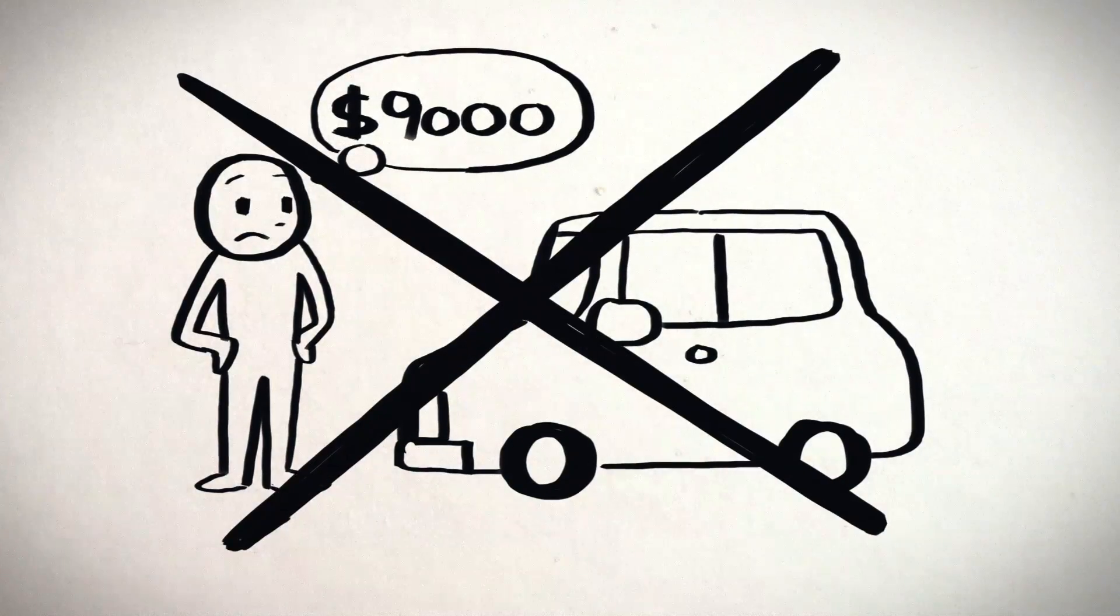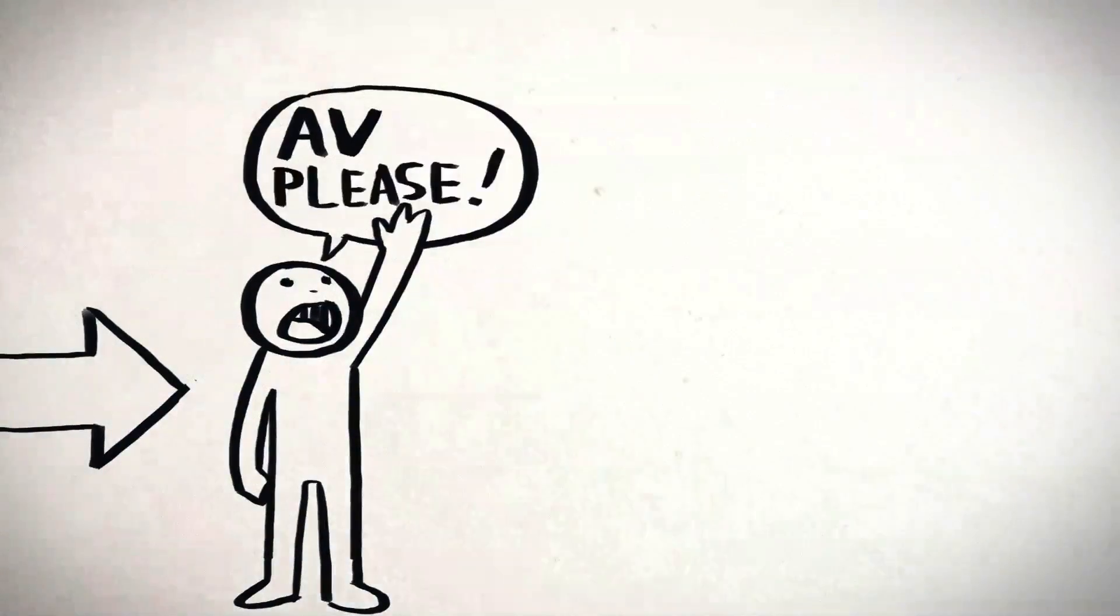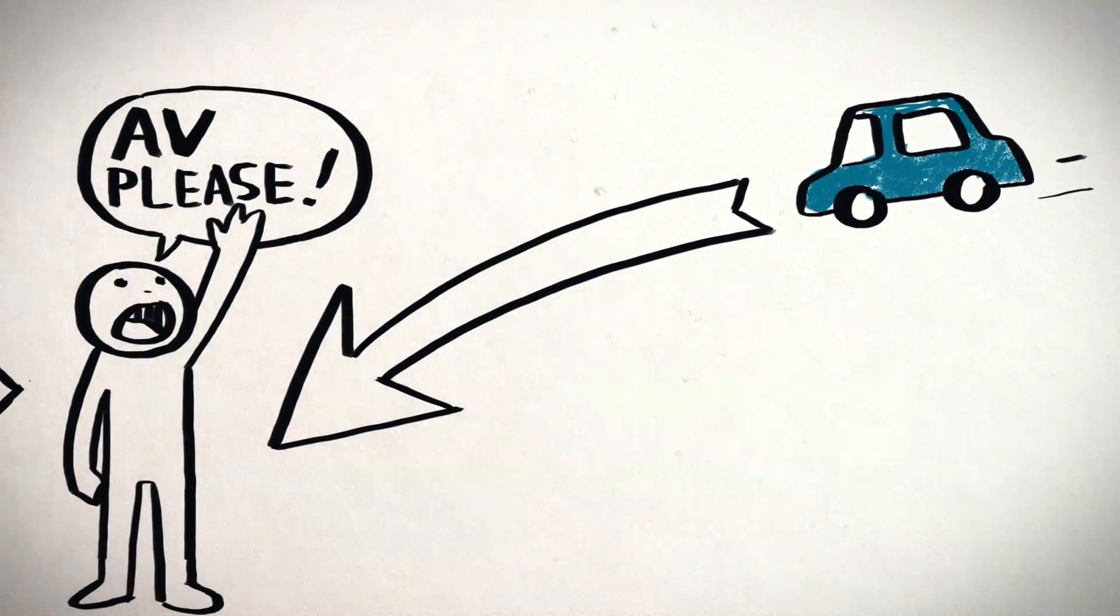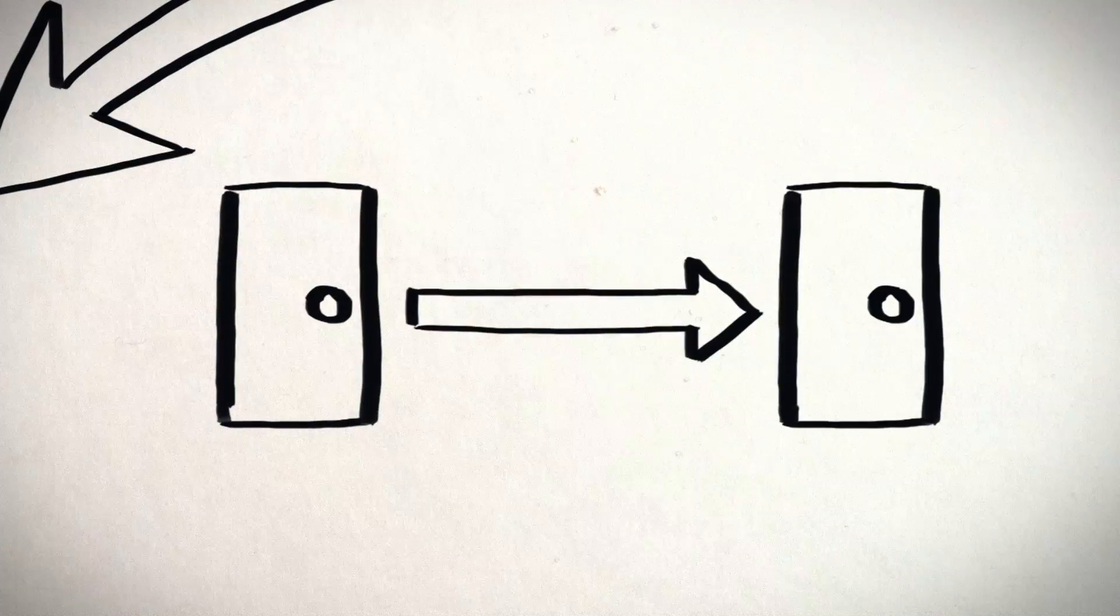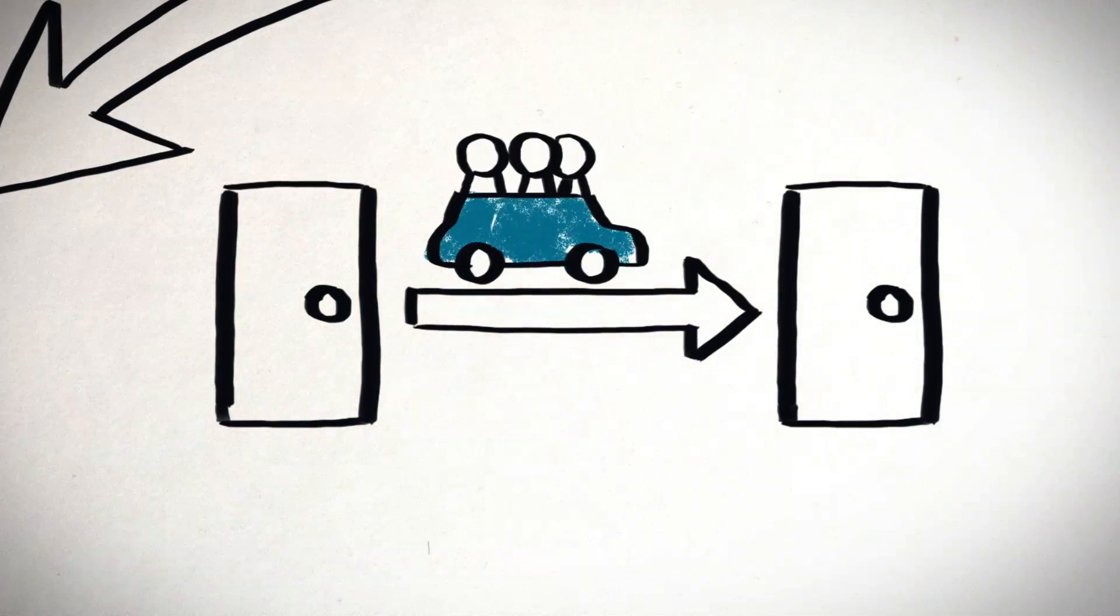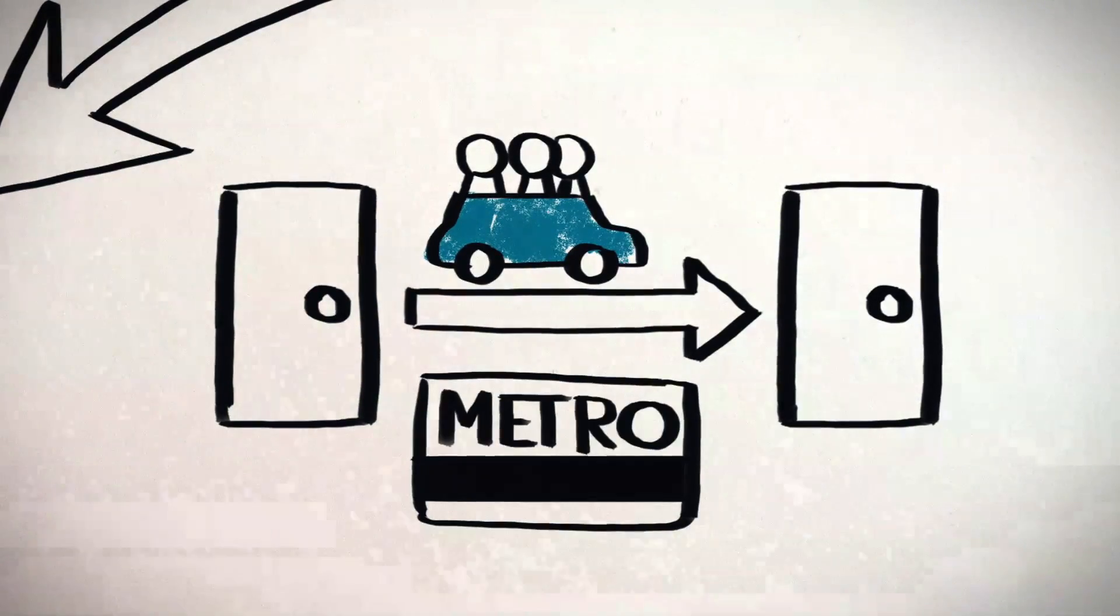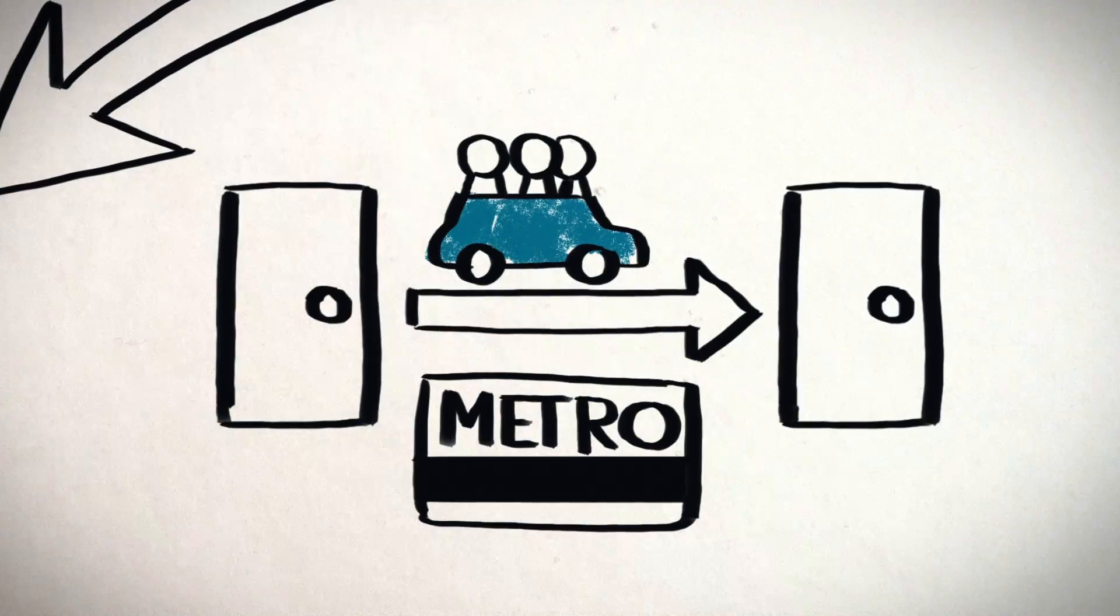Instead of spending $9,000 a year on your own car, when we combine car sharing and ride-hailing and buy a seat in a shared autonomous vehicle, we can get door-to-door transport at the speed of private car travel for the cost of a subway ticket. This transforms people's access to opportunity.